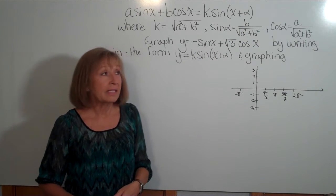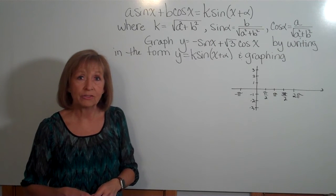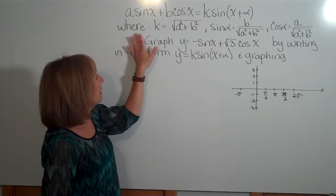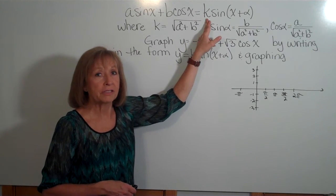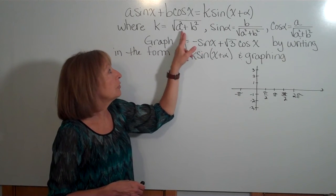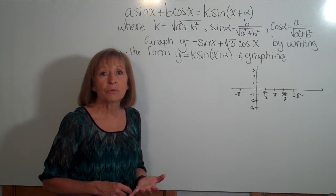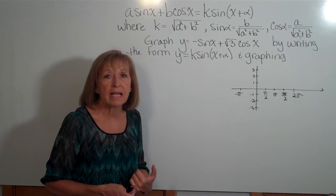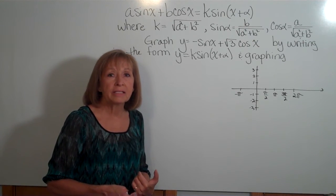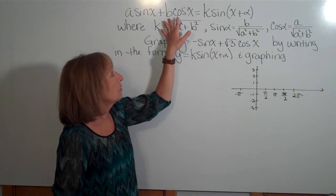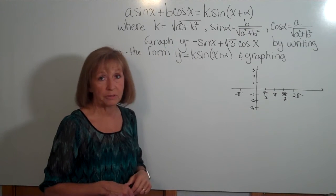There are specifics about how you get each of these components when making that transition. The first one is k, the new coefficient in front of your sine function, which is equal to the square root of a squared plus b squared. So you get k by taking the square root of the coefficient in front of the sine, squared, plus the coefficient in front of the cosine, squared. So k equals the square root of a squared plus b squared.